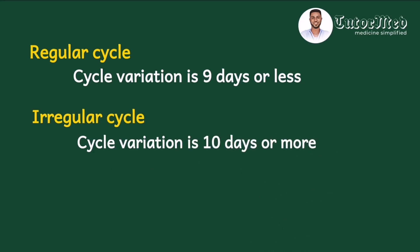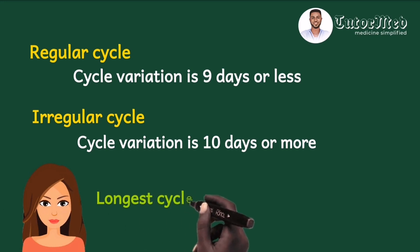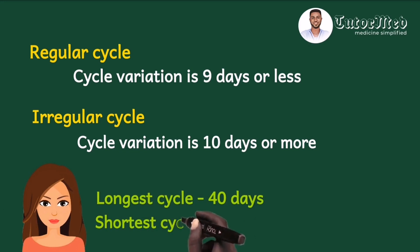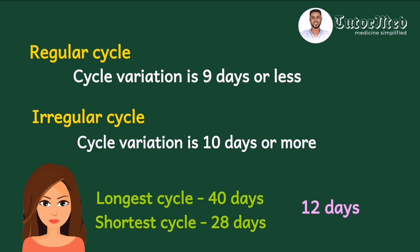Consider a woman whose longest cycle was 40 days and shortest cycle was 28 days over the previous 6 months. The cycle variation is 40 minus 28, which gives 12 days. Since it is more than 10, this is an irregular cycle. That is how to determine a regular versus an irregular cycle.